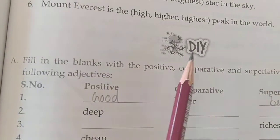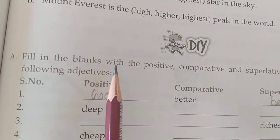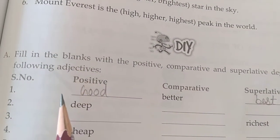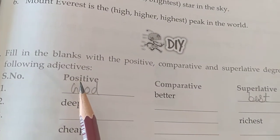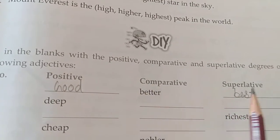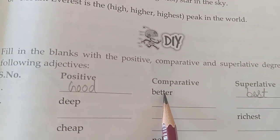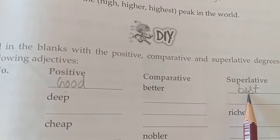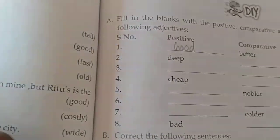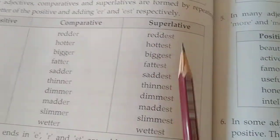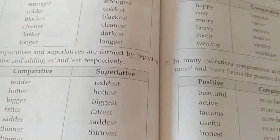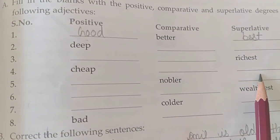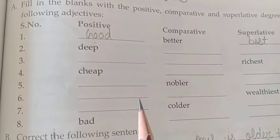Moving on to the next DIY, Part A: fill in the blanks with the positive, comparative, and superlative degrees of the following adjectives. For example, 'better' is given, so you have to write the positive degree 'good' and superlative degree 'best.' Likewise, for 'cheap' — cheaper — cheapest. Fill it in like this.